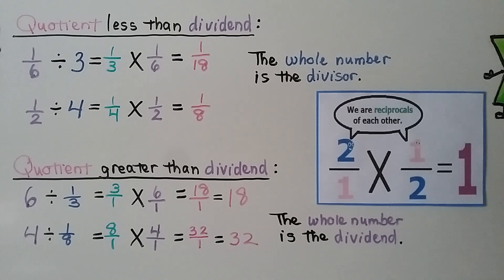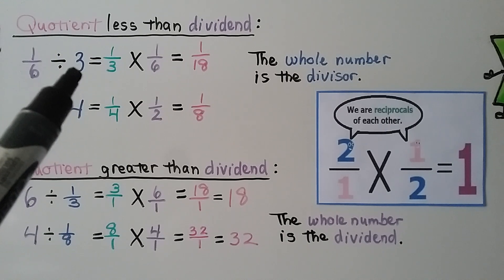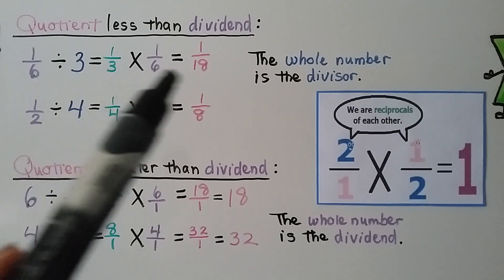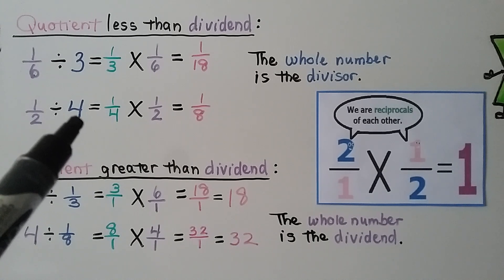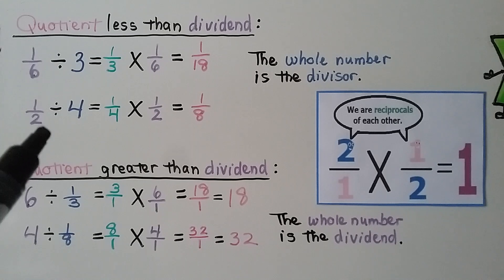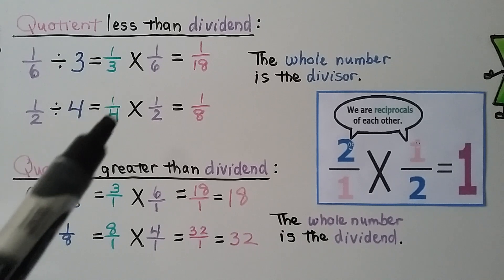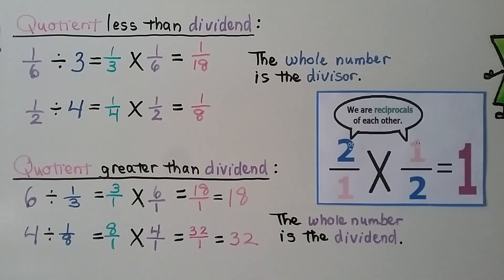For these examples where the quotient is less than the dividend: 1 sixth divided by 3 — we multiply using the reciprocal of 3, which is 1 third. Multiplying by the dividend 1 sixth, we get 1 eighteenth. For 1 half divided by 4, we multiply the dividend 1 half by the reciprocal of the divisor, which is 1 fourth instead of 4 over 1, and we get 1 eighth. With a whole number divisor, the quotient is less than the dividend.